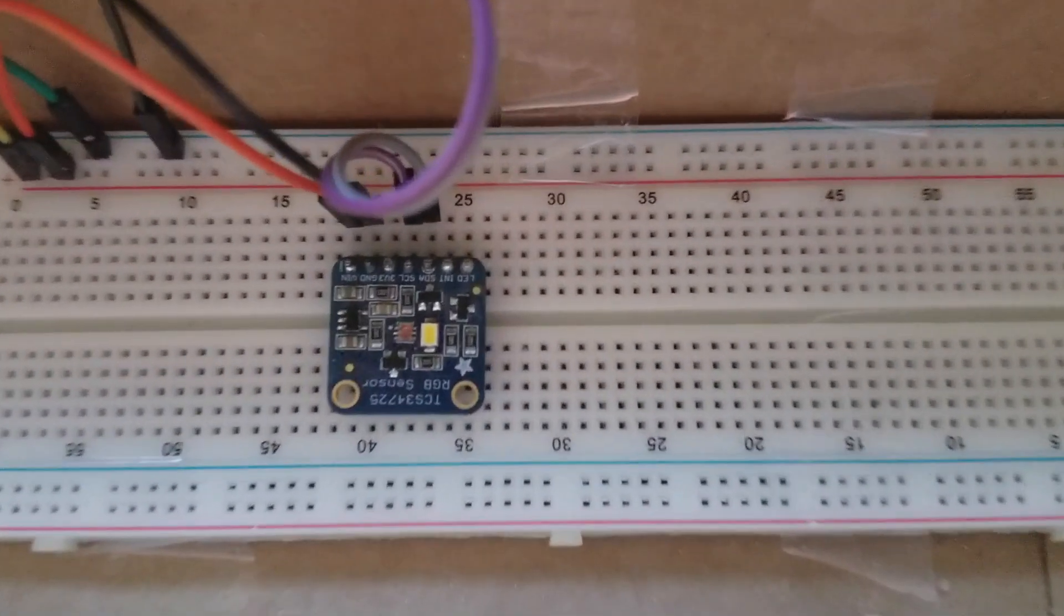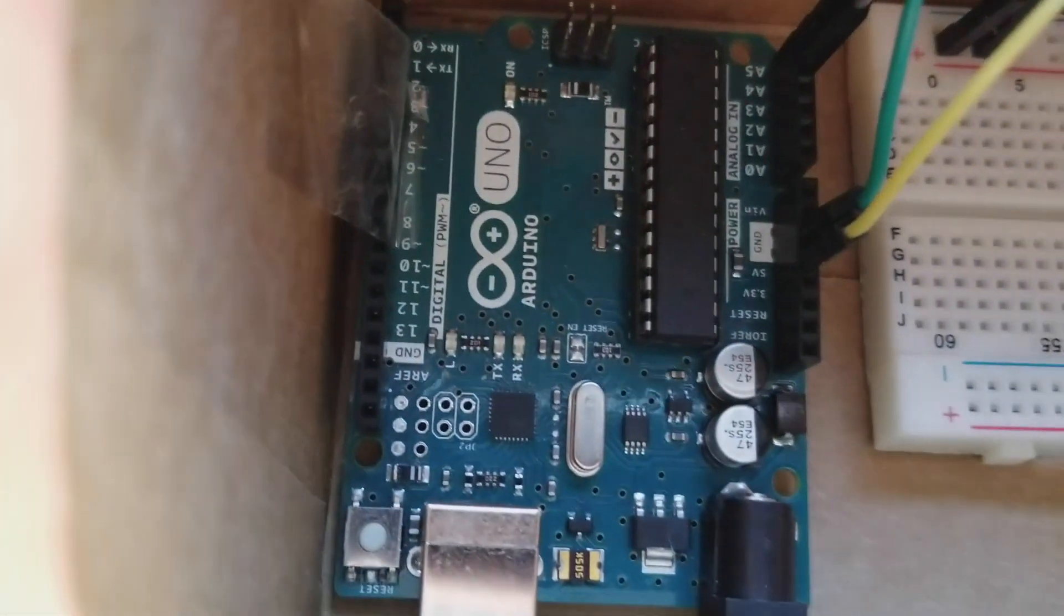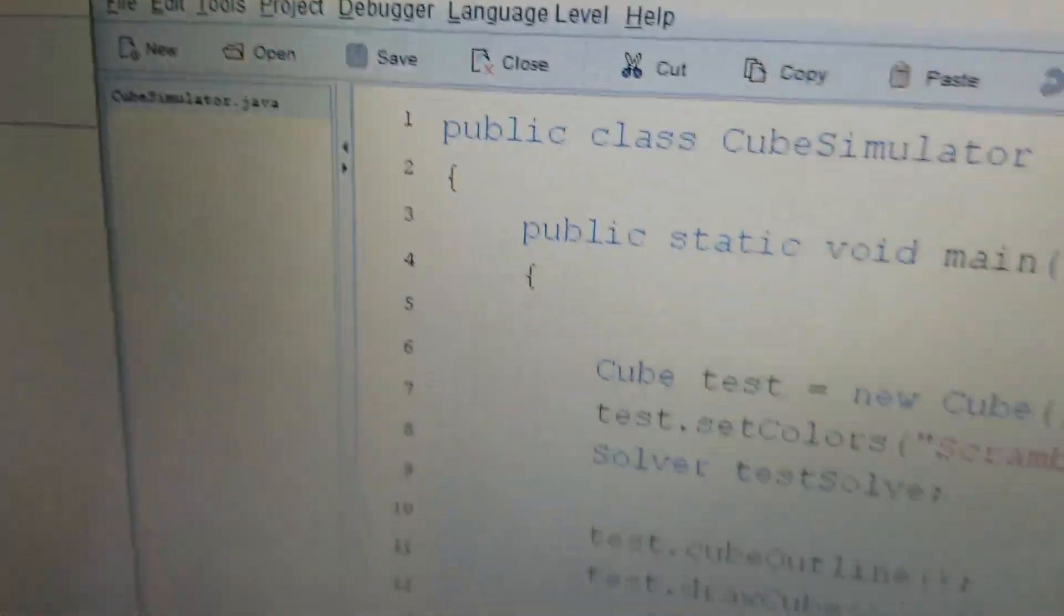Rubik's Resolver is made of an RGB sensor, an Arduino Uno, and a computer that can run Coolterm and Java.